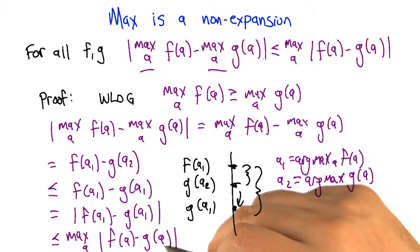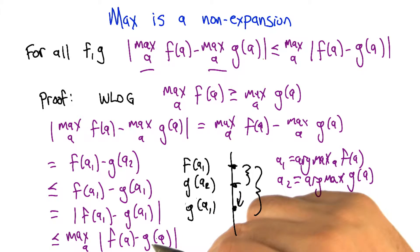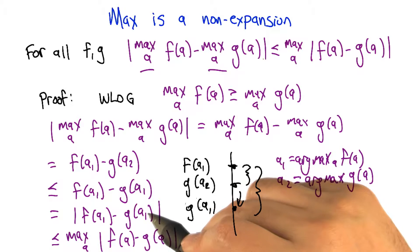And then that last step, you've noticed that the difference between A1, f of A1 and g of A1 is some number. You're maximizing over all possible a's you could stick into f and g. It has to include A1 by definition, which means the max might be bigger, but it couldn't be smaller than the A1. And so therefore, you're bounded from above.